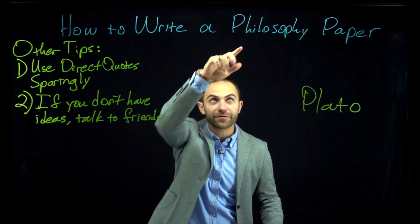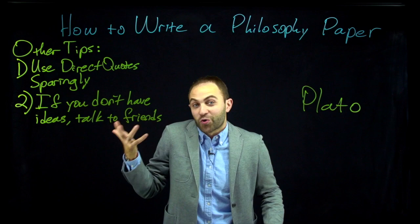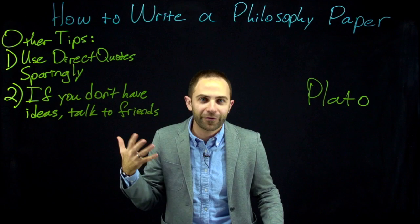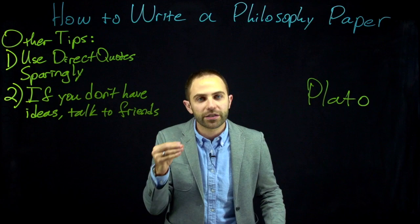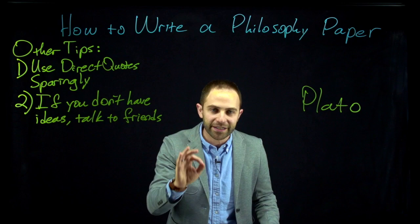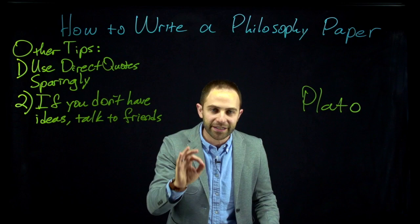Number two: sometimes when writing a philosophy paper you'll need an original idea — some somewhat interesting claim. What if no interesting original ideas have come to you? Here's what you do: make some friends, or call in favors from acquaintances, and explain the material to them. Spend 15 minutes explaining Plato and what you've been reading. In the process of explaining the material to other people, you'll clarify it for yourself, and most of the time an idea will just come to you — some objection or different way of thinking about it. That's your thesis for the paper.